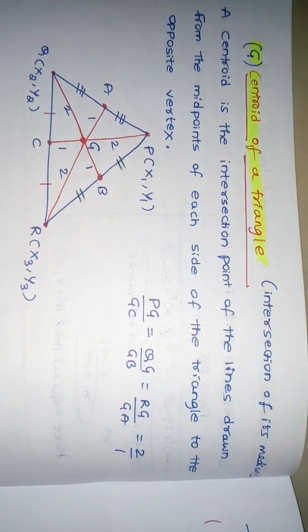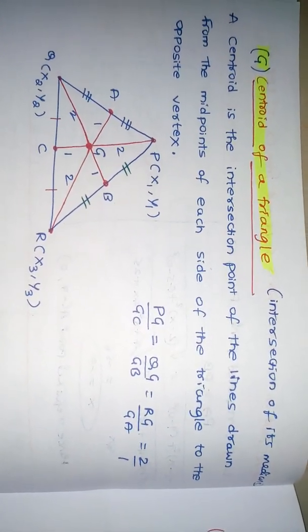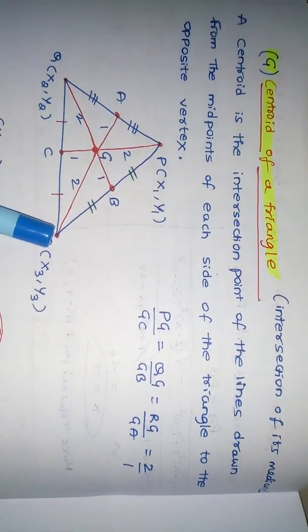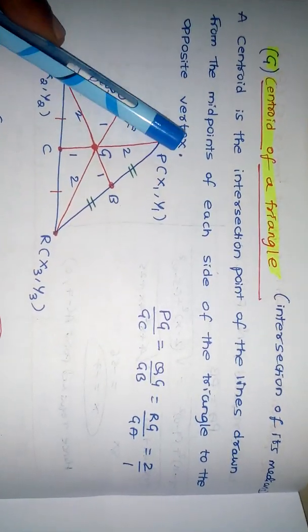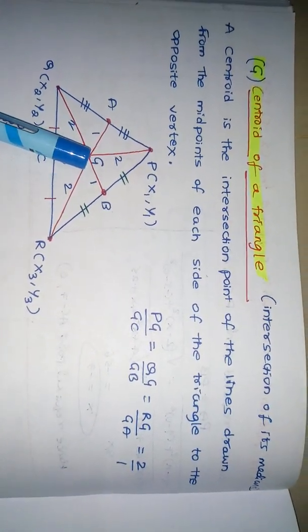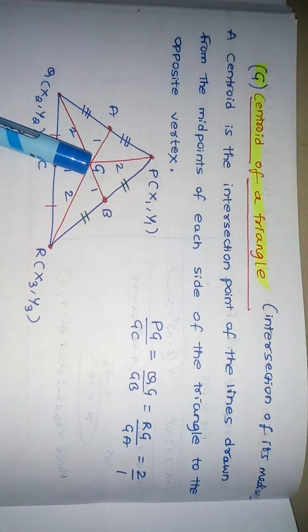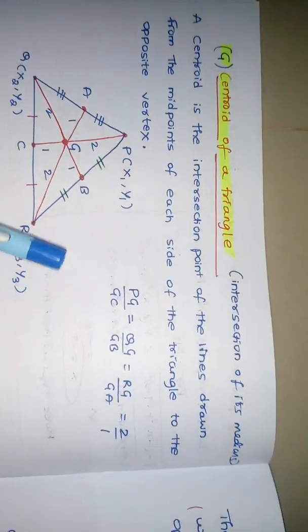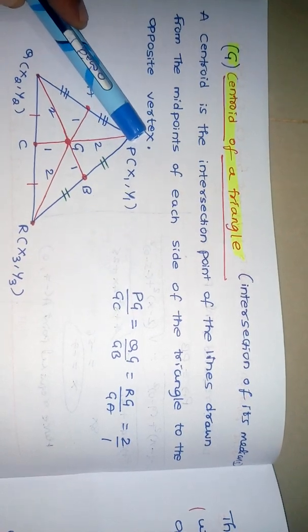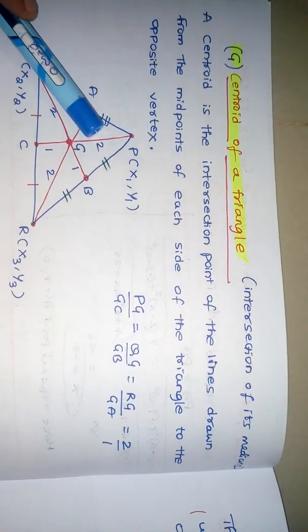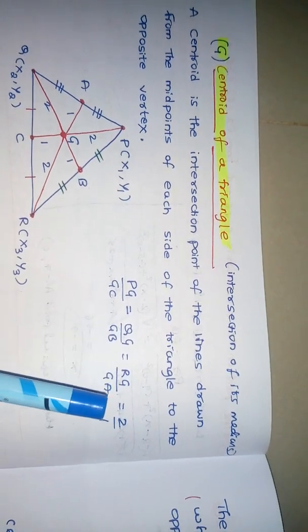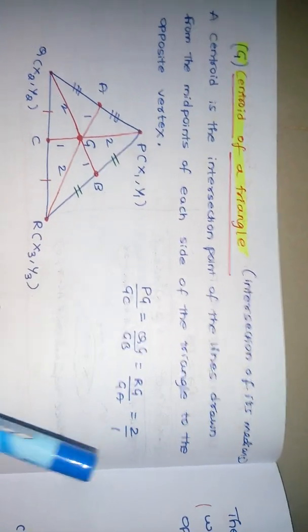As you know, the centroid of a triangle is the intersection of its medians. Here we can see this is one median, this is another median, and this is another median. All three medians intersect at a point called the centroid. Another property is that the medians are in a 2:1 ratio — that is PG by GC, QG by GB, RG by GA, all in 2:1 ratio.